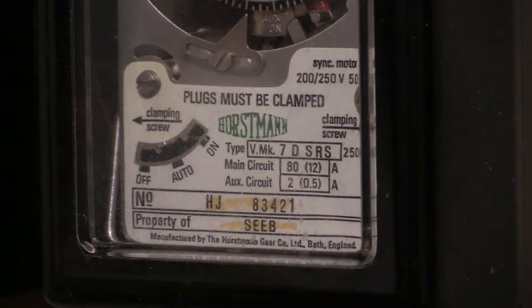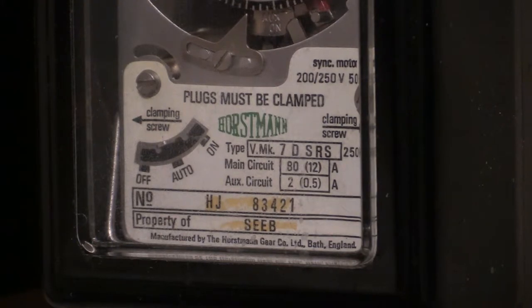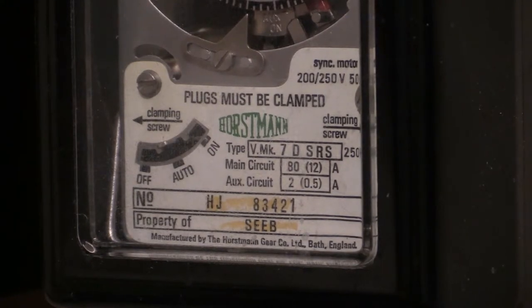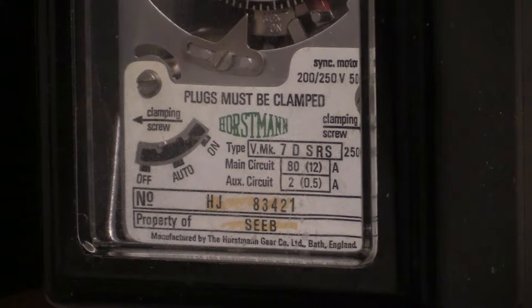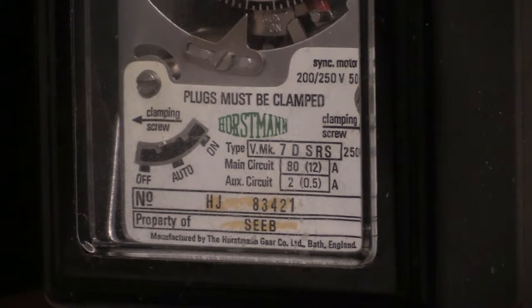In today's video, we're going to be looking at the Horstmann VMK 7D SRS. We've already covered the 7SRS, and in this video we're going to be looking at the 7D SRS and how it differs from the average everyday widely available 7SRS. This one switches on and off much like the standard one, it does rate change trigger like the standard one, but it also does one other extra feature.